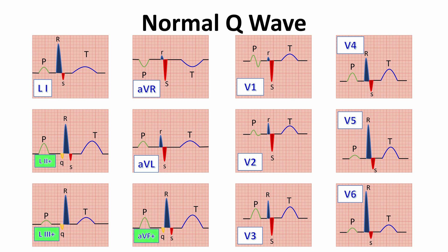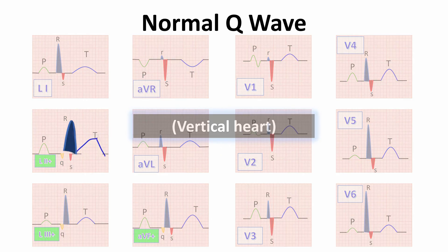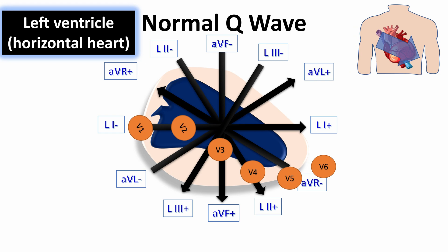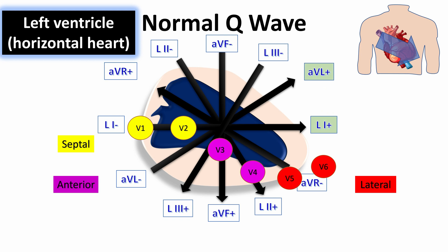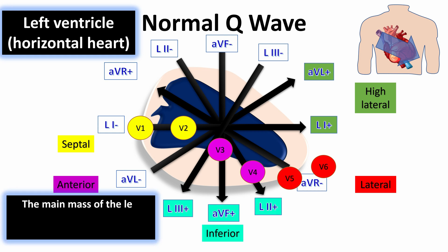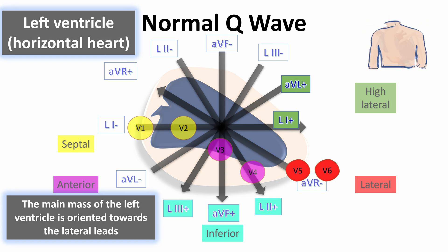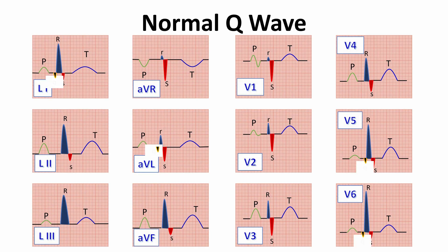We can see this on ECG paper on the inferior leads as shown. For the horizontal heart, the same geographical representation applies: the main mass of the left ventricle is oriented towards the lateral leads, so physiological Q waves appear with a negative wave in leads 1, AVL, V5, and V6. We can see this on ECG paper as shown. So the Q wave is not visible in all ECG leads.